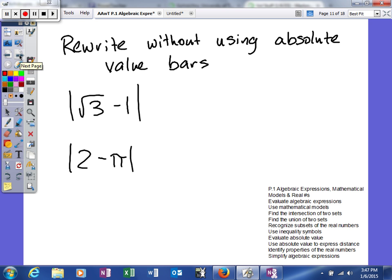So right now we have the absolute value of the square root of 3 minus 1. And what we're trying to do is write an algebraic expression, this will be numerical expressions in these, that will give us the exact same answer.